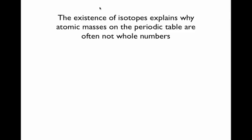The existence of isotopes explains why atomic masses on the periodic table are often not whole numbers. For example, carbon-12 is the major isotope of carbon, but the atomic mass listed is not a whole number.